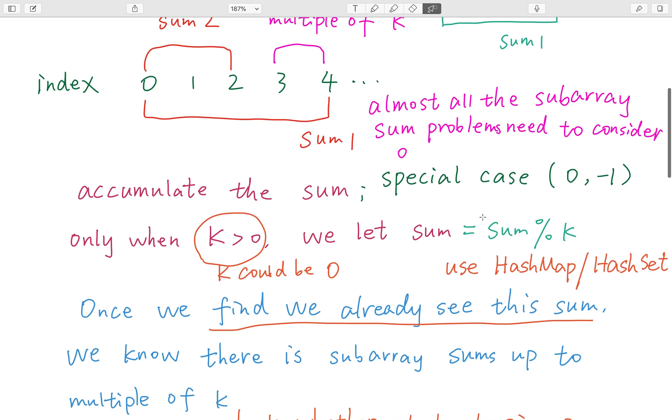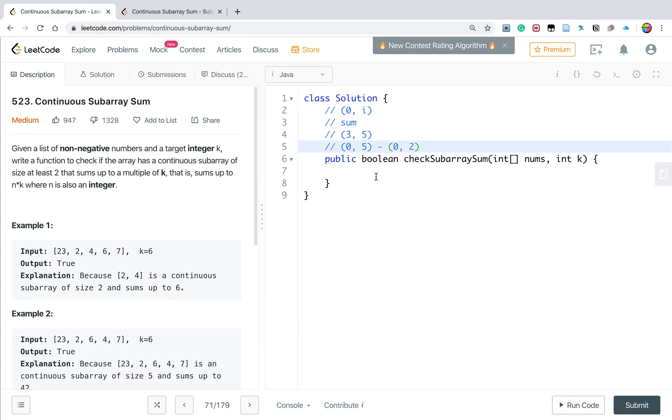Now let's write the code. We'll use a Map<Integer, Integer> and call it map. Don't forget to put the special case: zero maps to negative one.